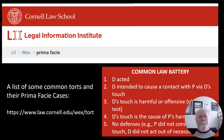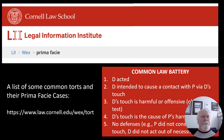The Legal Information Institute provides a list of basic torts and their elements. For common law battery — what we're talking about when someone hits someone else — we need evidence of five things: that the defendant did some act, that the defendant intended to cause contact with the plaintiff, that the defendant did touch and cause harm or offense, with an objective test of whether it was a harmful or offensive touching, and that the defendant's touch was the cause of the plaintiff's harm.